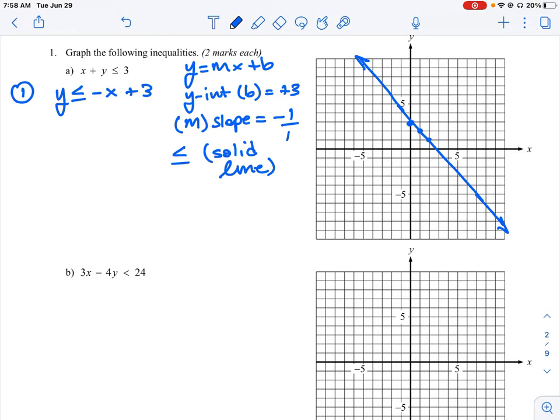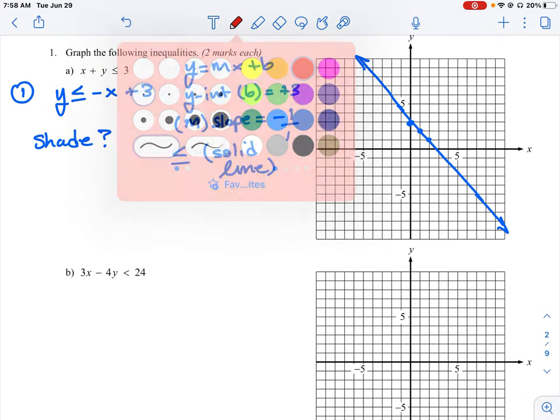And then our next thing that we need to know how to do here is where do we shade the equation. Because there's multiple solutions for this question. They just don't exist on the boundary line itself. So how do we know where to shade something? The easiest thing to do is we can take a look at the inequality.